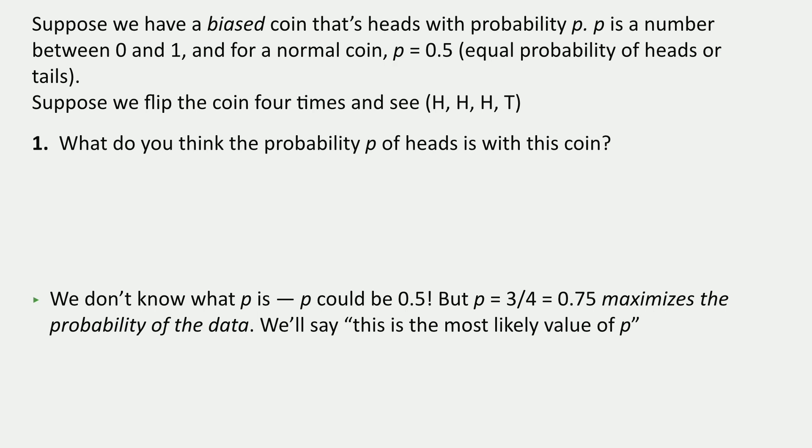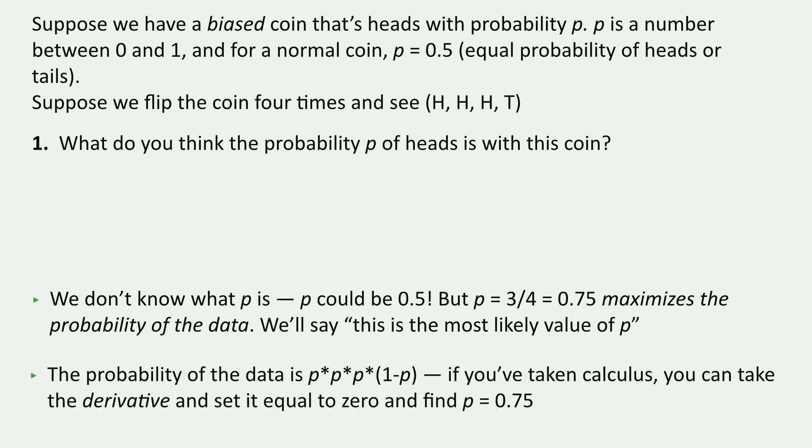And it's very deeply the right thing here because we saw three heads out of four trials. The most likely thing is that P was three out of four. And the reason is because we can actually think about what was the probability of seeing these outcomes. It was P times P times P times one minus P because it was three heads and then one tail. And that actually gives us a function defined in terms of P. And if you use calculus, you can find that that function is maximized at P equals 0.75.